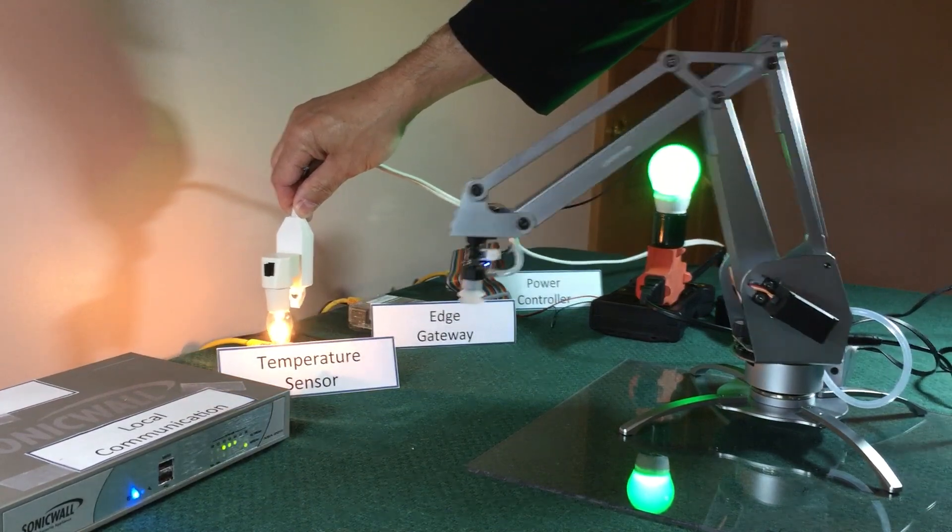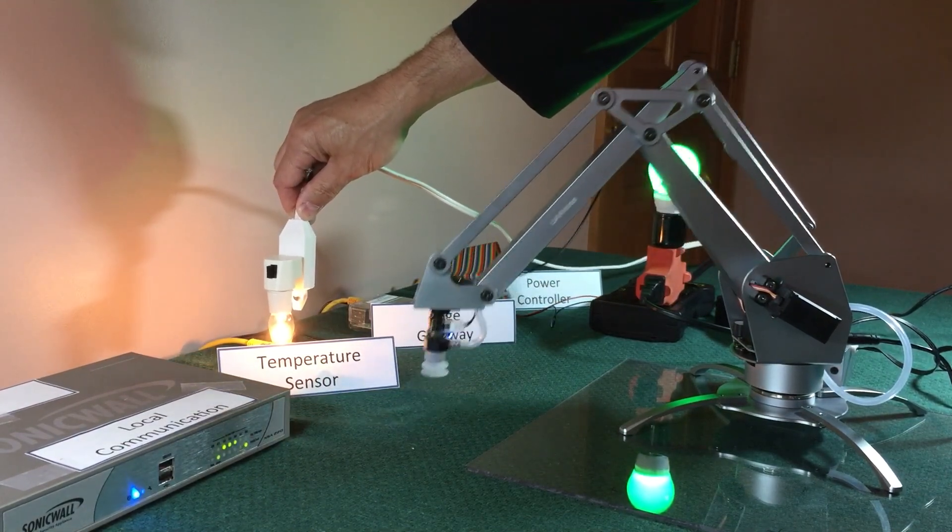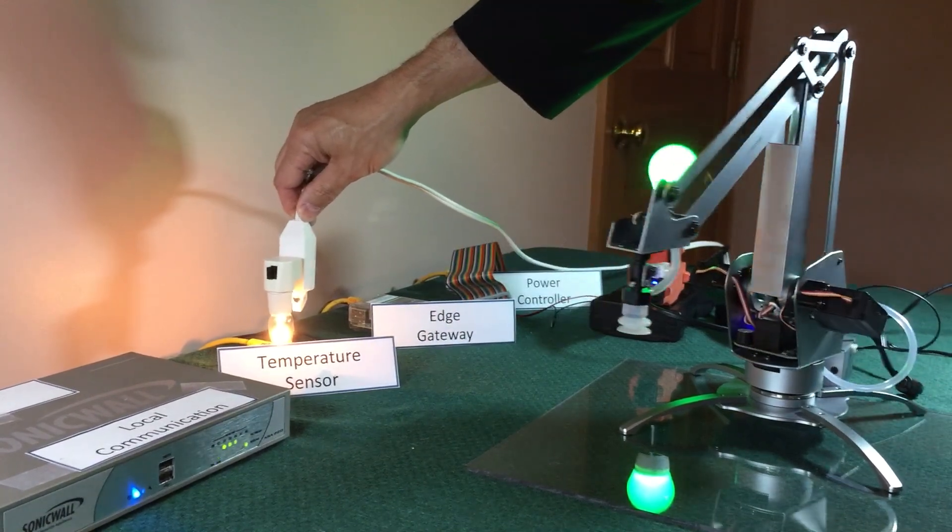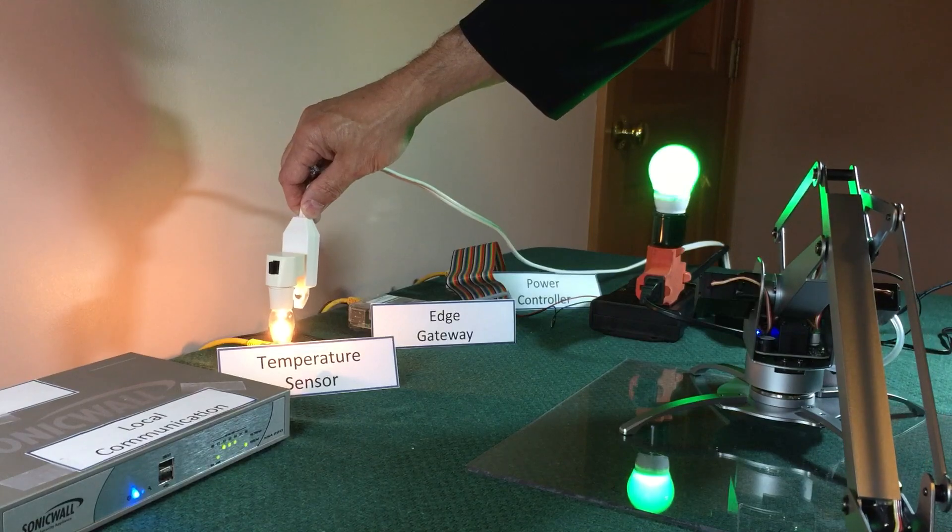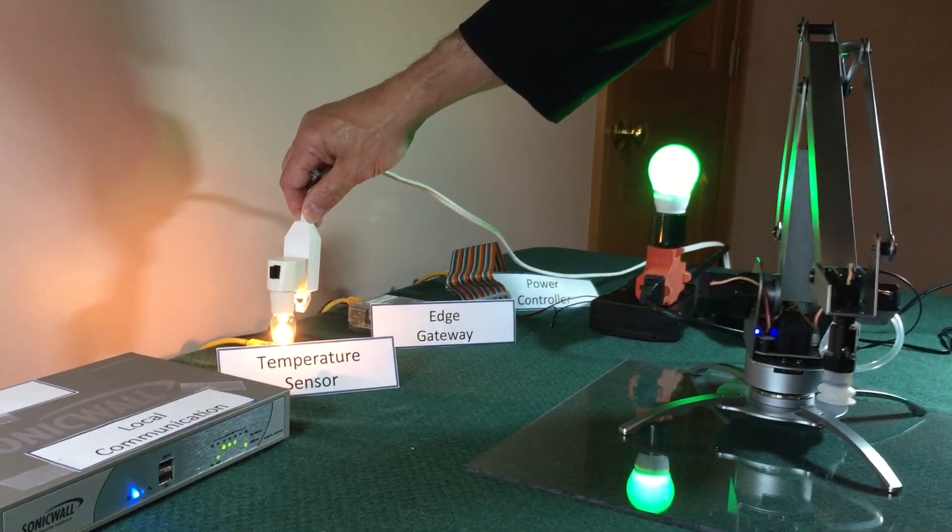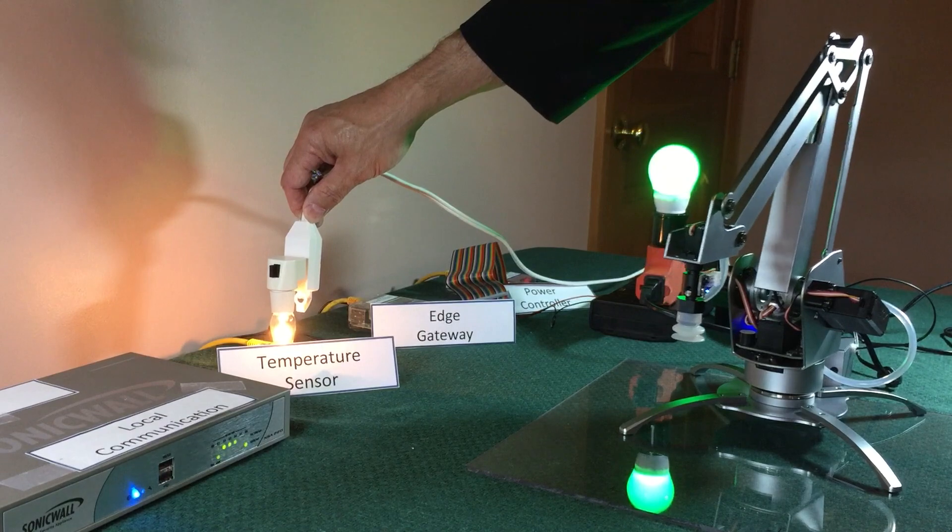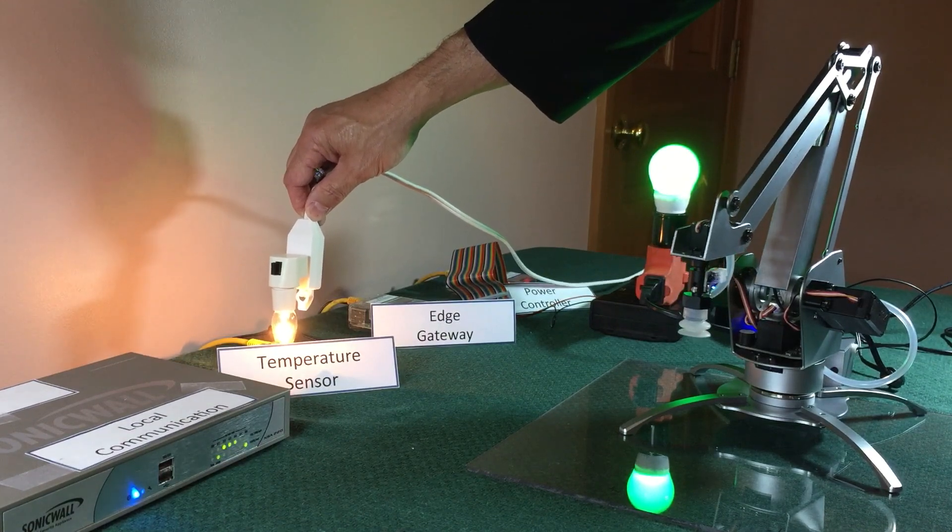So what I'm doing now is just increasing the temperature on the temperature sensor. It's pretty warm here, so when it goes up from 35 to 36 to 37, as soon as it exceeds 38 degrees it'll trigger an event in the power control.